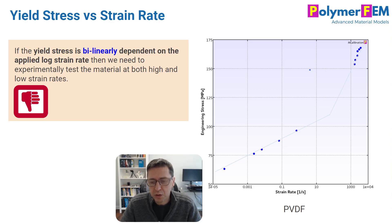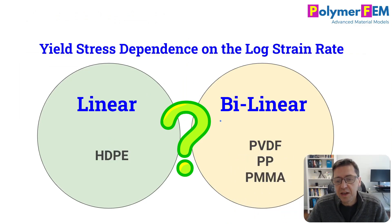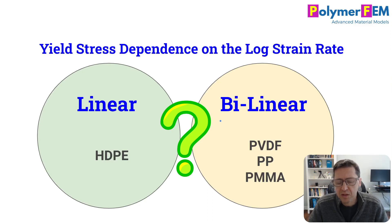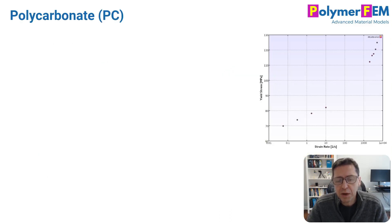So the question becomes: when is the stress versus logarithm of strain rate relationship linear, and when is it bilinear? Is this something we can actually predict before we end up doing the experiments?